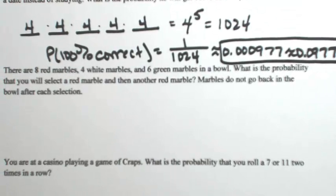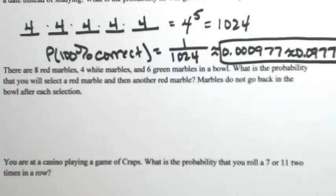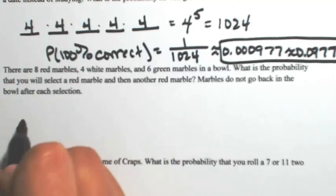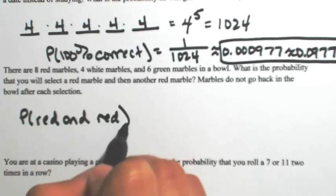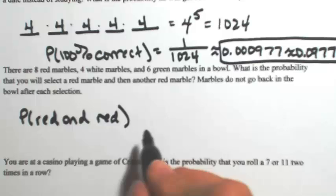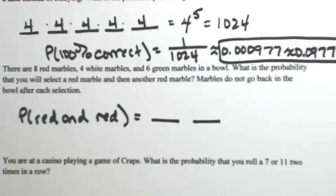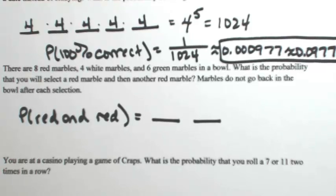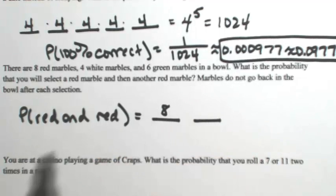In this next example, let's say there are eight red marbles, four white marbles, and six green marbles in a bowl. What is the probability that you will select a red marble and then another red marble? Keep in mind that marbles do not go back in the bowl after each selection. So we're looking for the probability of getting a red and then another red. We have two selections, so we're going to have two spots. Eight of the marbles are red, so for the first selection there are eight possibilities.